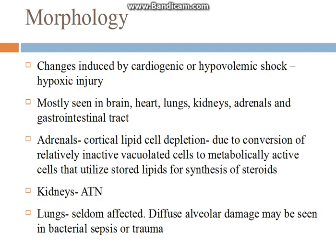Now going to the morphology of various organs in shock. Morphology is mostly seen in the brain, heart, lungs, kidney, adrenals, and GIT — it is mainly hypoxic injury. In the kidneys it leads to acute tubular necrosis, with cell death and necrosis of the tubules. In the adrenals there is cortical lipid cell depletion, because in shock there is catecholamine release from adrenal cells. Normally these cells are inactive and vacuolated, but in shock they become metabolically active and utilize all stored lipids for steroid synthesis. The lungs are very less affected in shock, but if affected there will be diffuse alveolar damage.